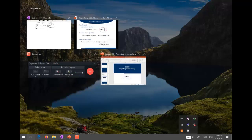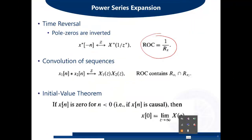The last property in this context is the initial value theorem, which says that if X(n) is zero for n less than zero — that is, if X(n) is causal — then X(0) equals the limit as Z approaches infinity of X(Z). So substituting Z → ∞ in X(Z) gives you X(0). This is the initial value theorem.